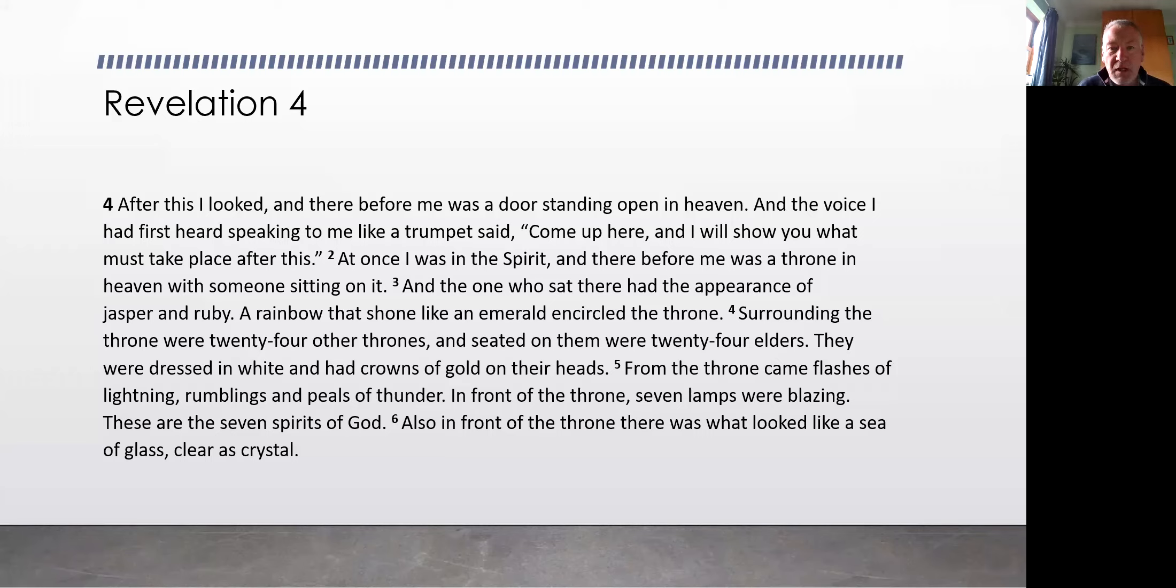At once I was in the spirit and there before me was a throne in heaven with someone sitting on it, and the one who sat there had the appearance of jasper and ruby. A rainbow that shone like an emerald encircled the throne. Surrounding the throne were 24 other thrones and seated on them were 24 elders. They were dressed in white and had crowns of gold on their heads.